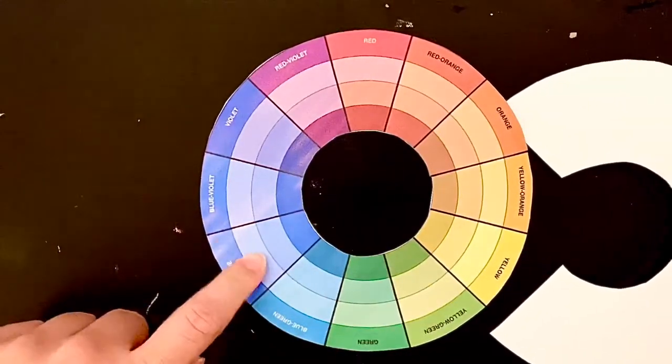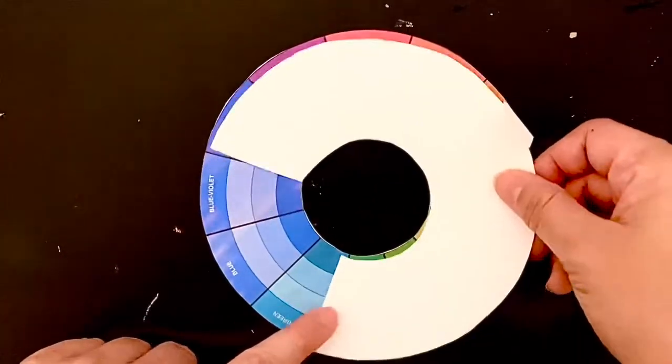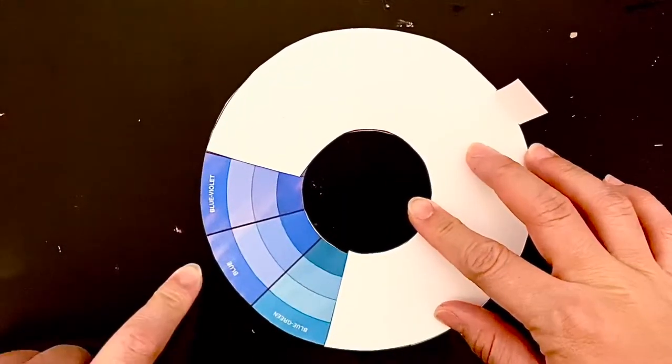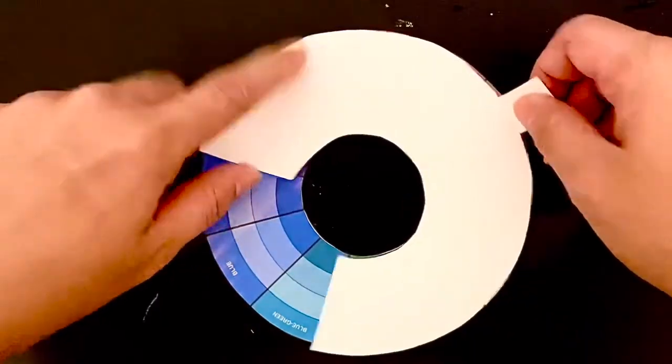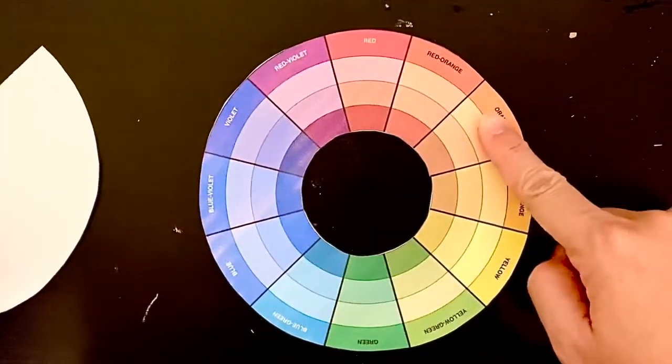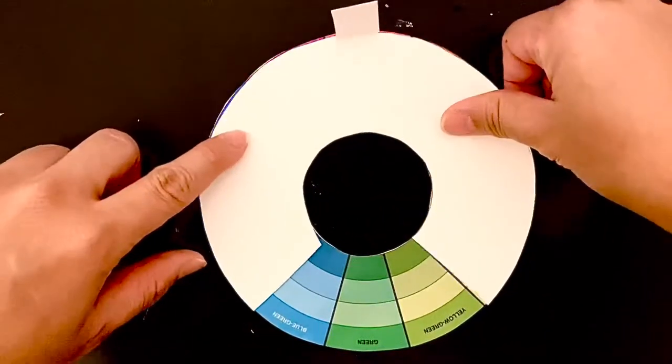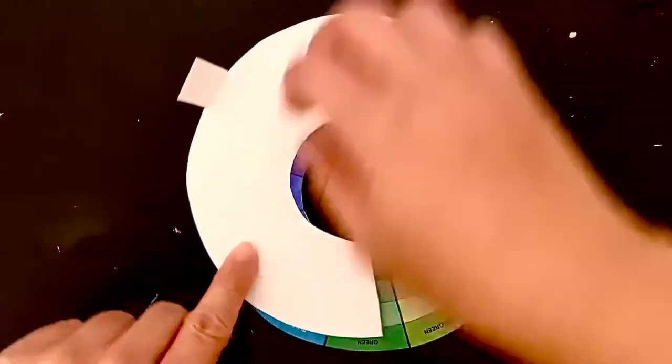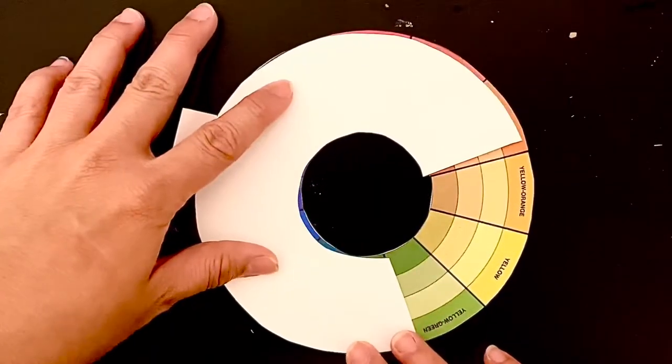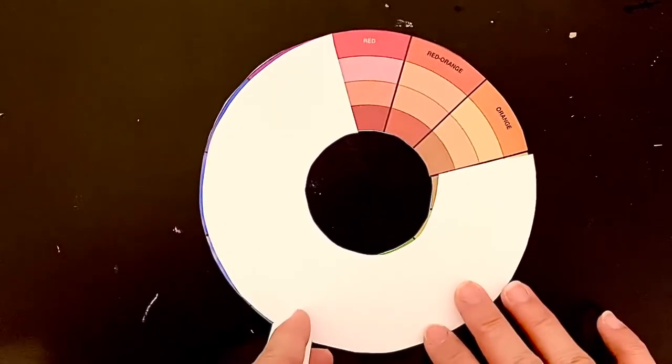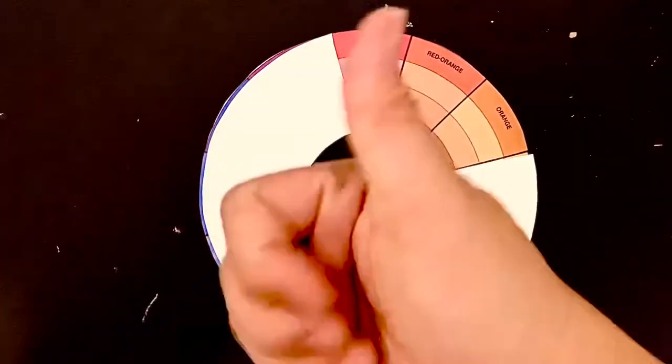I chose blue, blue violet, and blue green for today's example, but there are so many other combinations that you guys can choose from. Yellow green, green, blue green, yellow, yellow green, green, and so on. Pick which set of analogous colors you're going to work with before you get started.